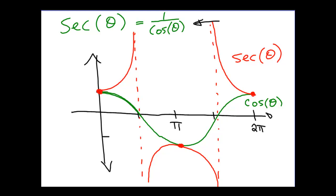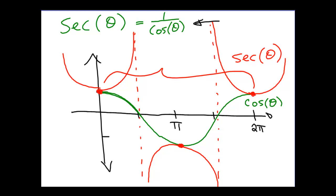What about period? What is the period of our secant graph — how long does it take for it to repeat itself? The graph will do something like this over here and come back up, so we can see where this graph repeats itself. Secant, like cosine, will have a period of 2π.